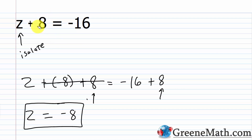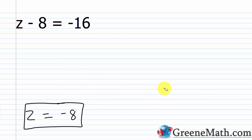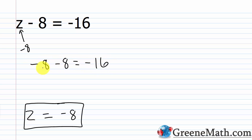We want to check — make sure we got the right answer. At this stage you might make a silly mistake, like adding 8 to one side but forgetting the other, or adding the wrong number. So always check. Plugging negative 8 in for z: negative 8 minus 8 equals negative 16. Negative 8 minus 8 is indeed negative 16. So z equals negative 8 is the correct solution.